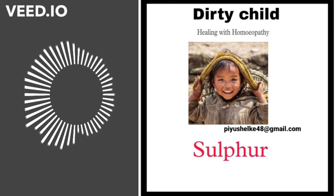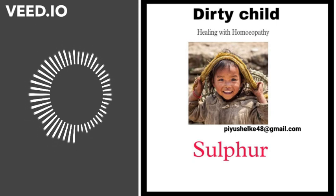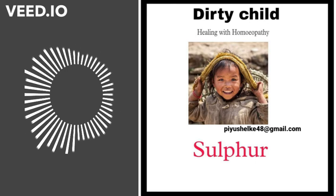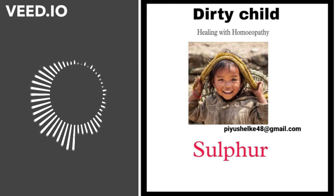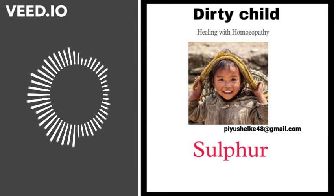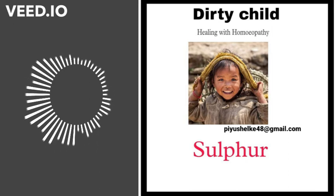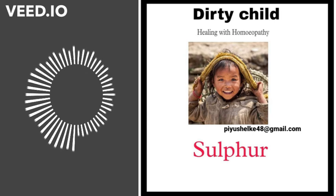They might suffer from constipation — the stool is dry and hard, which makes the child cry while passing motion. Another helpful characteristic is that these children are extremely pleased with their possessions; their toys are the best toys, their family is the best ever. They also have an astonishing money sense. Sulfur is also a clever child, but untidiness is a marked feature.